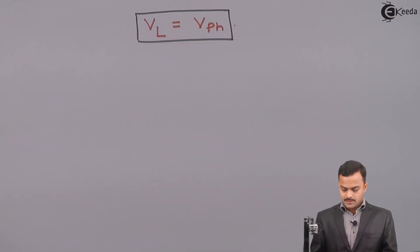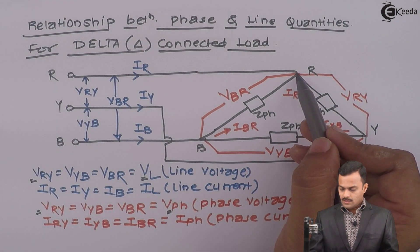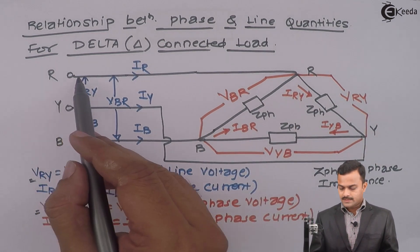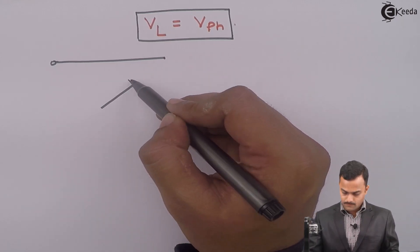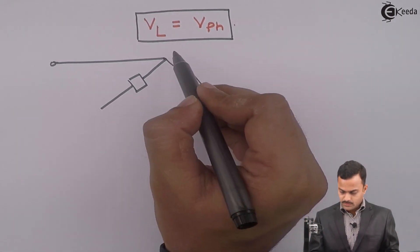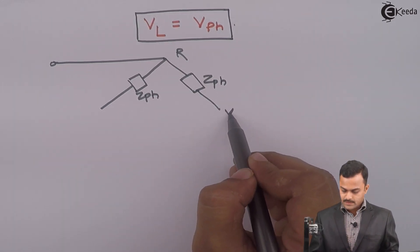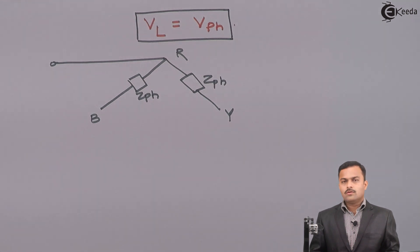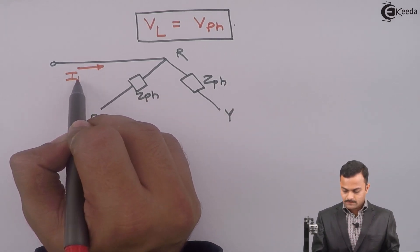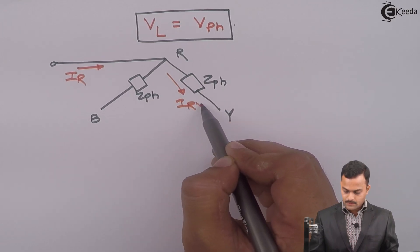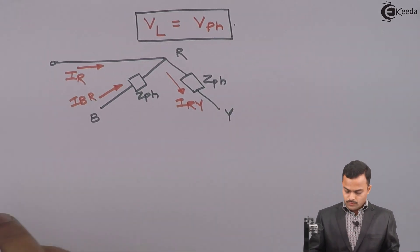Similarly, we have to establish a relationship between I_L and I_PH. For that purpose, I will take one node in this circuit — I will consider the node at R. At this node, there are three branches connected: the first, second, and third branch. This is the R node, with phase impedances connecting to points Y and B. Along with the branches, I will also draw the branch currents: I_R, I_RY, and I_BR.